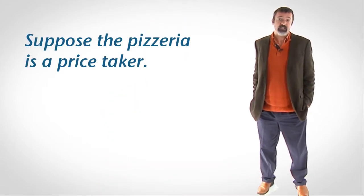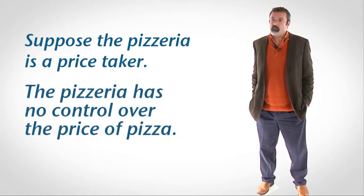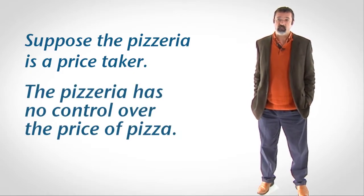Suppose our pizzeria is a price taker. That means that the pizzeria has no control over the market price of pizza. Price takers face intense competition, so if our pizzeria were to charge more than its competitors, no one would buy its pizza. Price takers also sell a small quantity of output relative to the total quantity sold in the market. This means that as long as it doesn't charge more than its competitors, our pizzeria can sell all the pizza it produces. Consequently, our pizzeria has no incentive to charge less than its competitors.